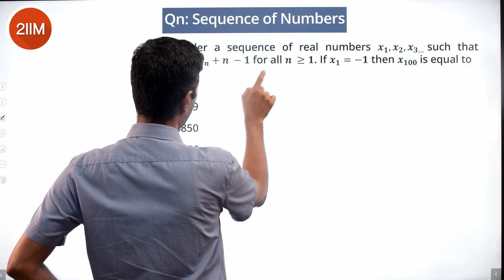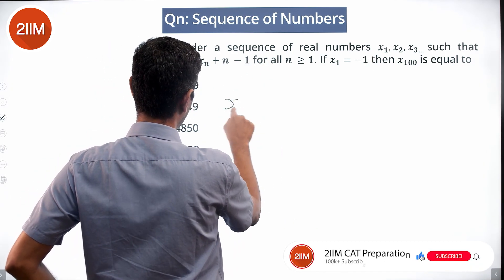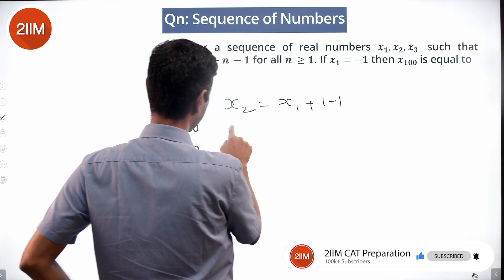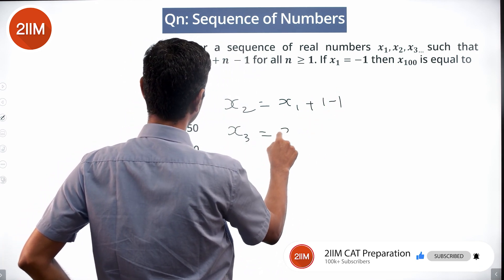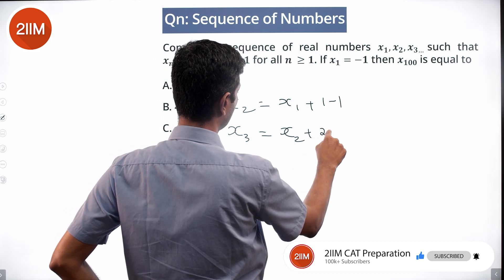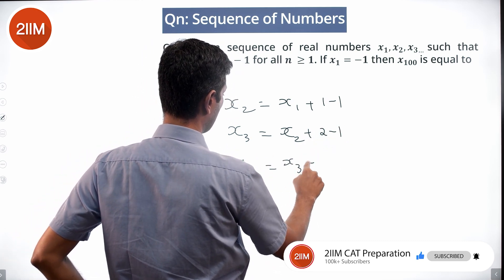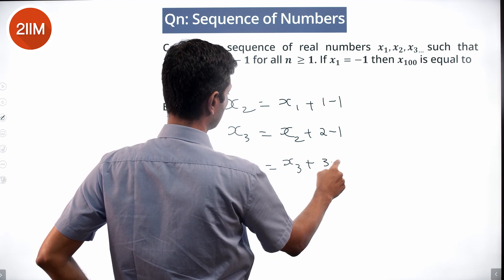Let's start with n = 1. We have x2 = x1 + 1 - 1, x3 = x2 + 2 - 1, x4 = x3 + 3 - 1, and so on.